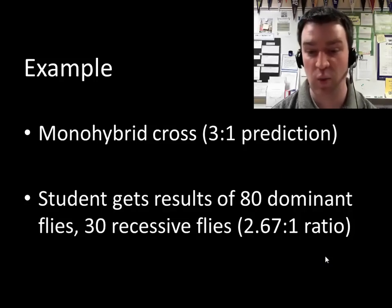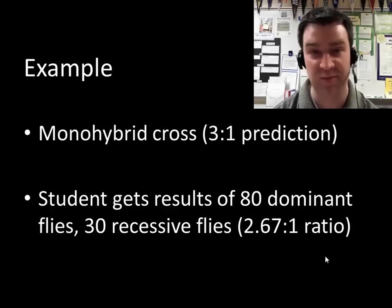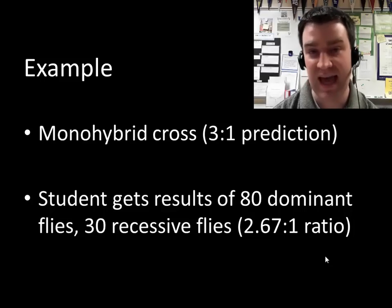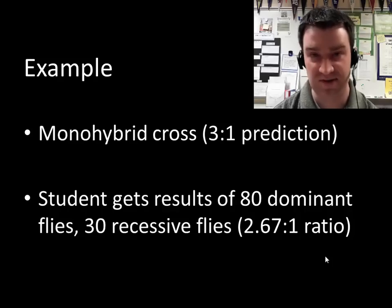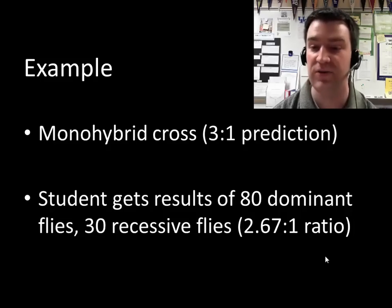What if we actually did that cross with flies and a simple Mendelian trait? Let's say a student gets 80 flies in the next generation who are dominant in phenotype and 30 who are recessive in phenotype. That isn't a three-to-one ratio — that's a 2.67-to-one ratio.